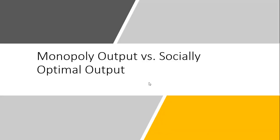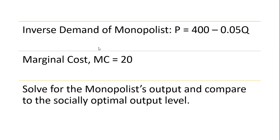Hello. In this video, we're going to solve for the monopolist output and the socially optimal output and compare the two. We'll start with the monopoly. This monopolist has an inverse demand given by price equals 400 minus 0.05Q. This firm has a marginal cost that is constant at $20, MC equals 20. We want to solve for the monopolist output and compare that to the socially optimal output level.